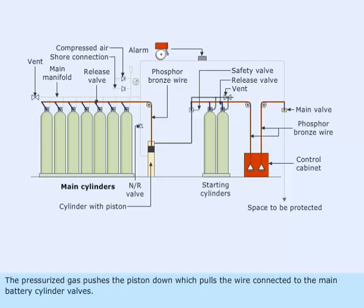The pressurized gas pushes the piston down, which pulls the wire connected to the main battery cylinder valves.